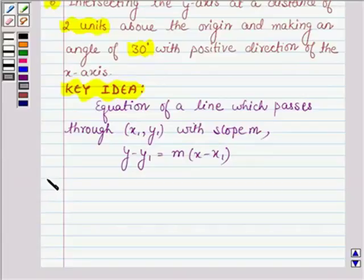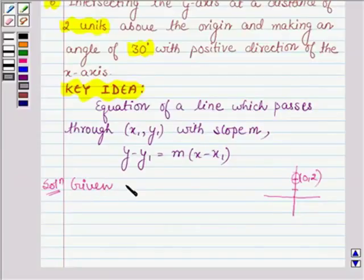Now, let's start with the solution. Here we are given that the line intersects the y-axis at a distance of 2 units above the origin. This is 1 unit and this is 2 units. The name of this point is (0, 2), where the x-coordinate is 0 and the y-coordinate is 2. So, the given point is (0, 2).